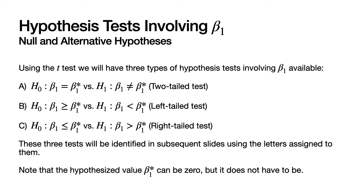The second test is called a left-tailed test. The null hypothesis states that beta_1 is greater than or equal to some specified value beta_1 star, and the alternative states that beta_1 is less than beta_1 star. Finally, we have a right-tailed test. The null hypothesis says that beta_1 is less than or equal to beta_1 star, against the alternative that beta_1 is greater than beta_1 star.